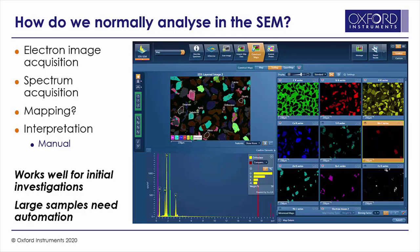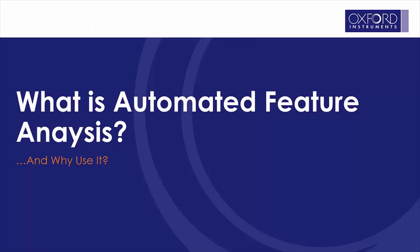That works brilliantly and is an exceptionally useful tool. I then make my own interpretations based on that data — a kind of manual approach. That works excellently, especially for initial investigations and occasional work. But if I wanted to tell something about the wider sample, it's not going to be practical in terms of time and effort to visit every single field of view that might make up an entire sample. This sample is something like two and a half centimetres across and the field of view is just below one millimetre across, so it would take an awful lot of time manually. This is why automation is needed for getting that larger scale understanding. So, what is automated feature analysis and why should we use it?